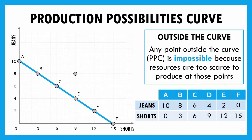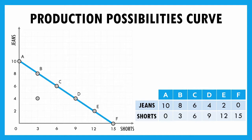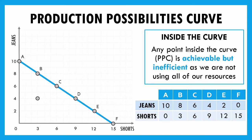The production possibilities curve is sometimes called the production possibilities frontier because it represents that leading edge we can't go past on our own. If I get to the end of the day and I've only made four pairs of jeans and three shorts, we'd say I was pretty inefficient. Those points are achievable, but I'm not using all my resources to the best of my ability — maybe I spent some time killing time or wasn't working as efficiently as possible. Anywhere inside the curve is possible but inefficient. Sometimes that inefficiency has a specific name, like unemployment — if labor is available but not being used, that's being inefficient.